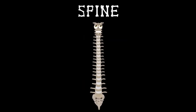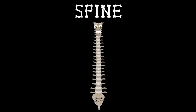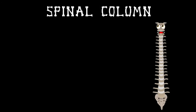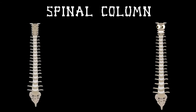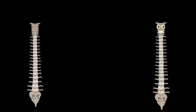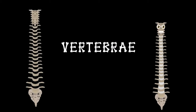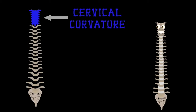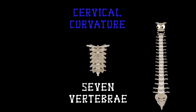You have a spine — it's what you see. And if you want to learn my parts, watch this video of me. I am your spinal column, made of lots of bones. These bones are called your vertebrae; collectively, your spine's their home. The first group we'll look at is the cervical curvature, made up of seven vertebrae.